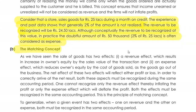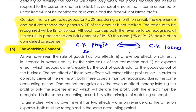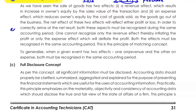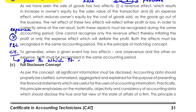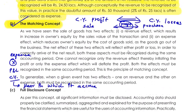Moving on to the matching concept: current year profit should be matched against current year expenses. If I have made a sale, all the purchases should be in the current year itself. If there is one expense that does not belong to the current year, it should not be considered in the P&L of the current year. It will be considered in the year in which it accrues. If it is for the next year, it will be considered in the next year.